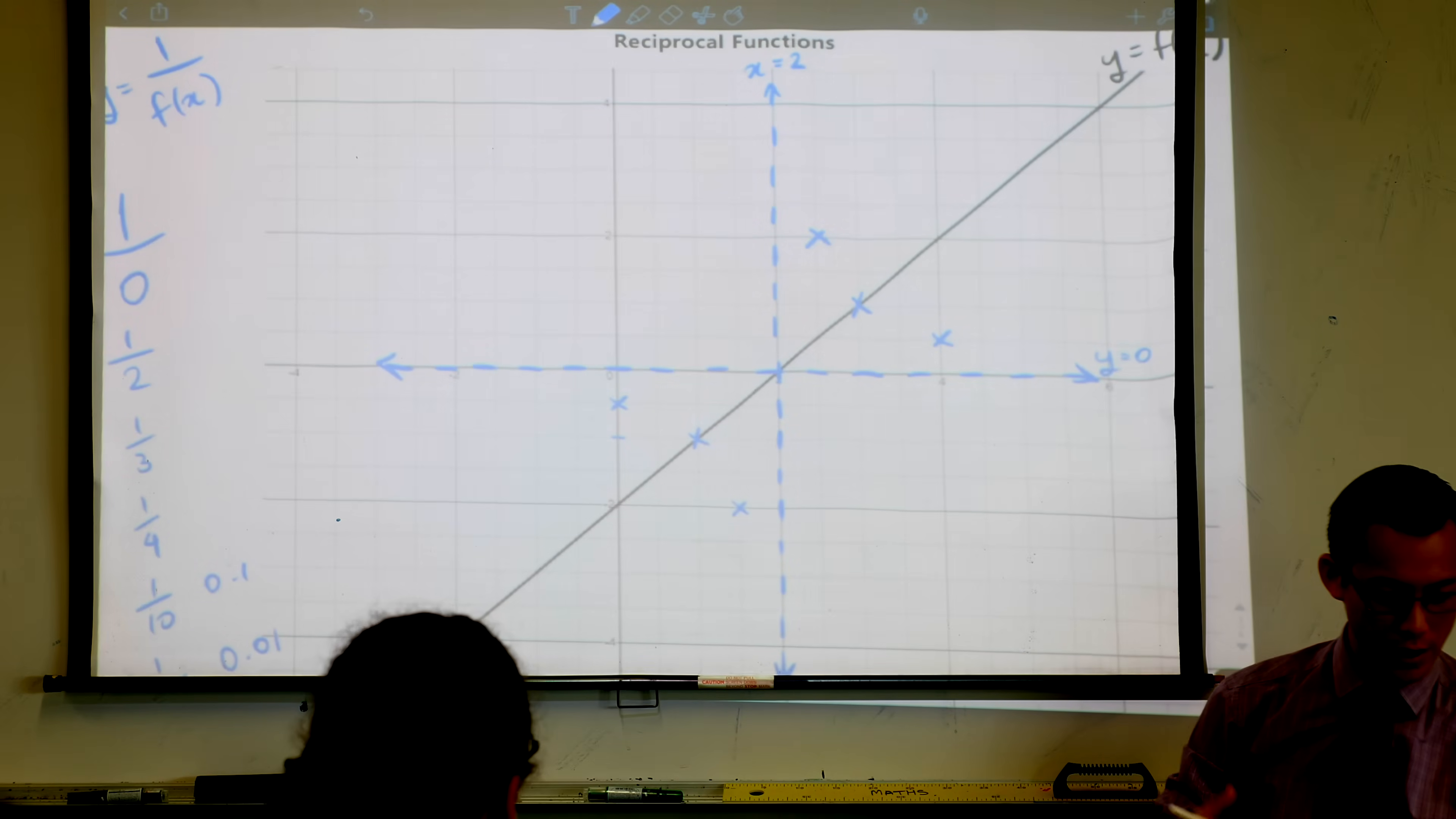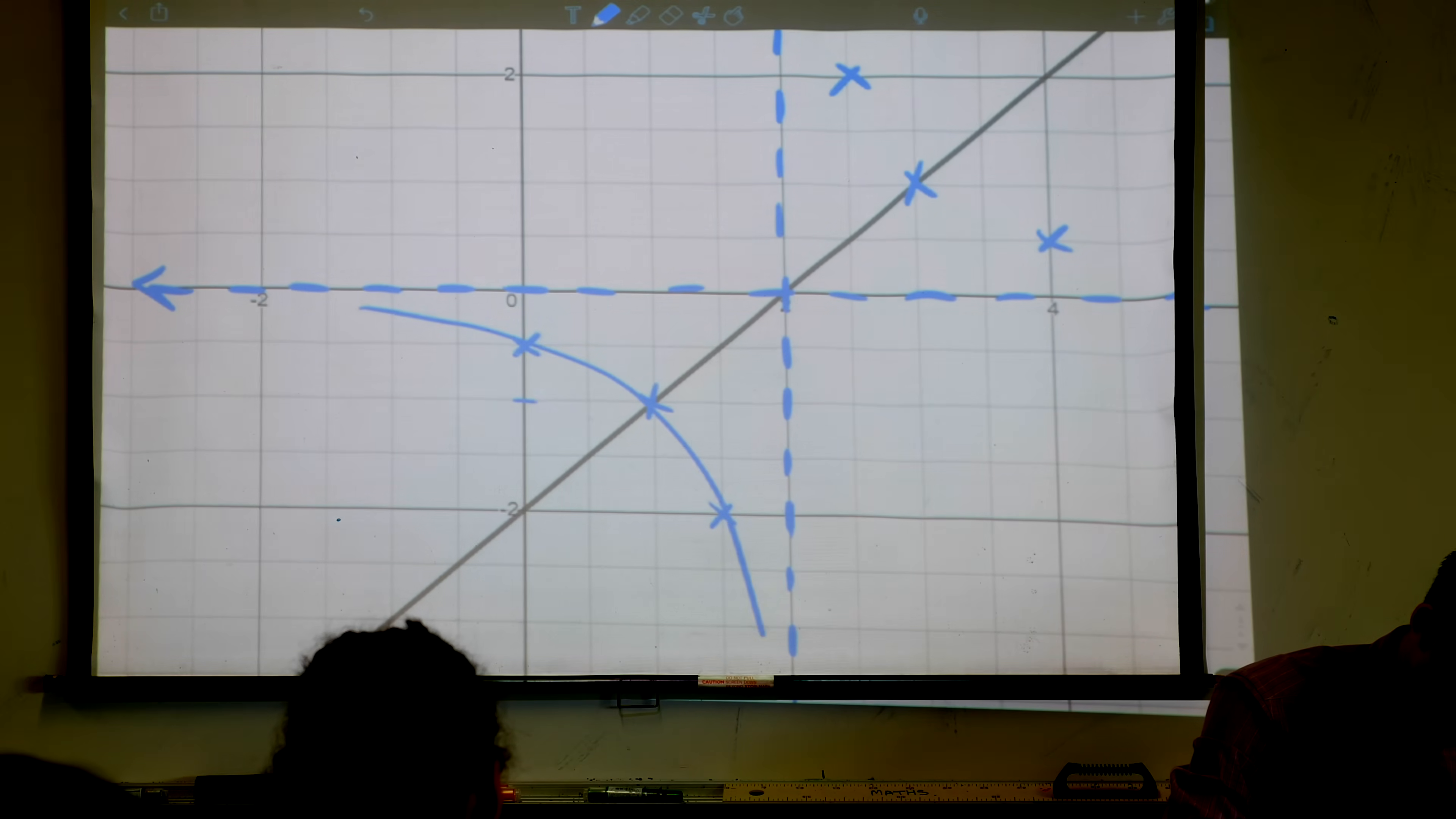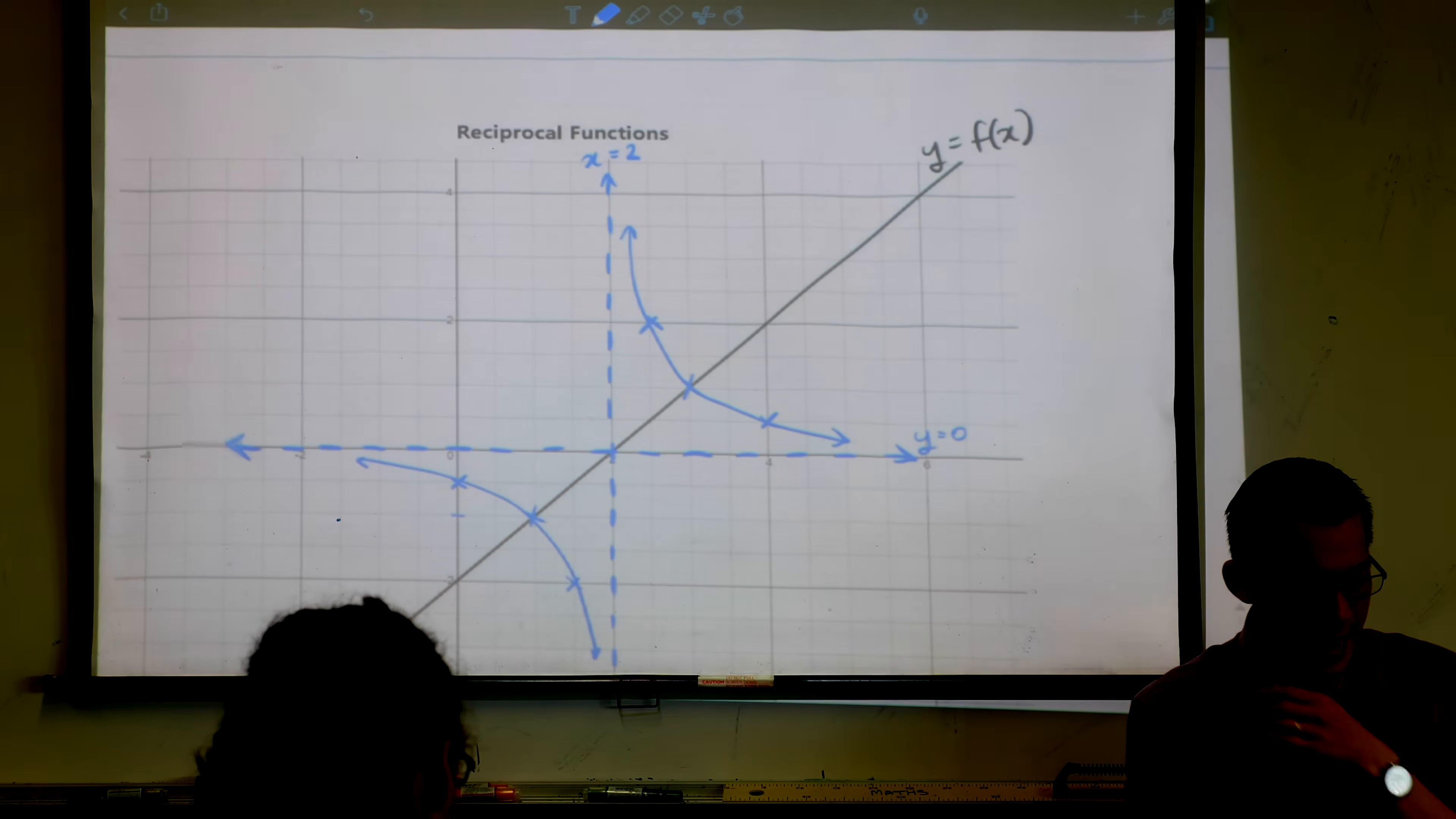I feel like between those x's and those asymptotes, I feel like we've got enough of a shape here. Can you connect the dots? I think we're going to get a shape a bit like this. There's the left-hand side. And I'll do my best to do the right-hand side.